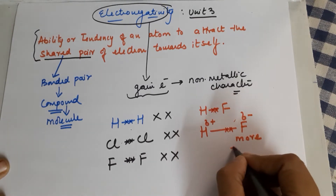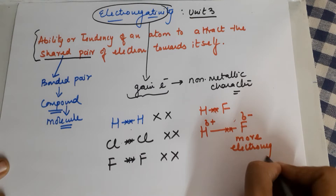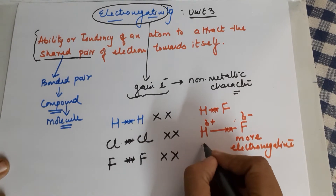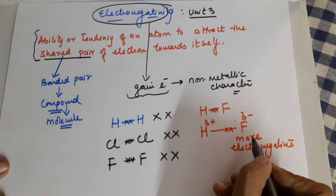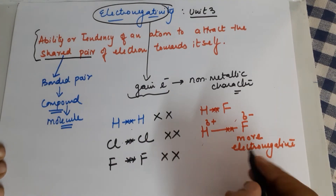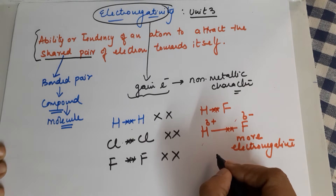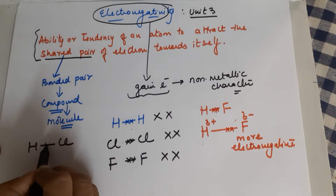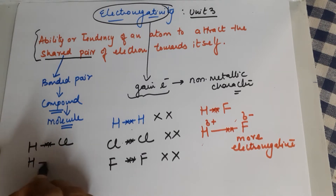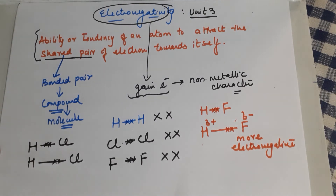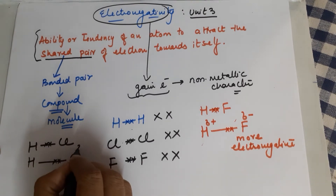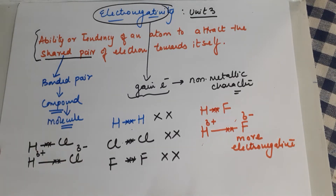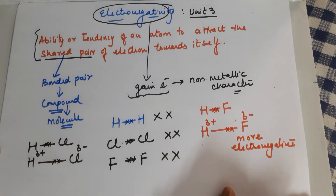So fluorine becomes the negative pole and hydrogen the positive pole. Fluorine is more electronegative and hydrogen is less electronegative in comparison. Similarly, in HCl, the shared pair of electrons moves slightly towards Cl, so Cl gets a delta minus and H gets a delta positive — chlorine is more electronegative than hydrogen.